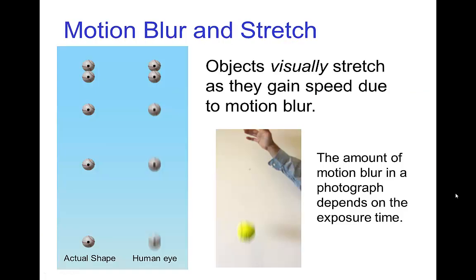Getting back to stretch — there is a noticeable stretching that occurs when objects are moving, but this is not that the objects are physically stretching. They visually appear to stretch due to motion blur. We also see this in photographs, depending on the exposure time of the photo.